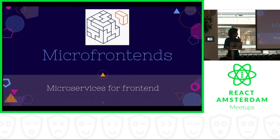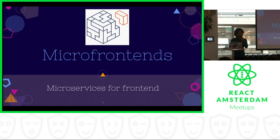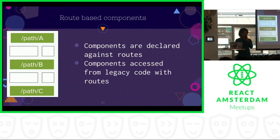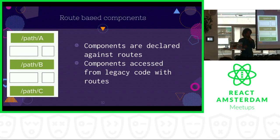Micro frontends are basically microservices for the frontend — they're the microservice analog in the frontend world. By using micro frontends, we can apply the strangler pattern to the frontend. At the base of it, they are route-based components. You declare these components using routes, and then you can access them on your page by declaring them with those routes.